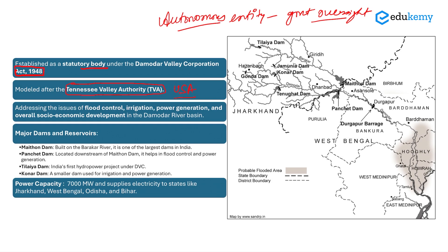The core objective in laying out this project was to address the issues of flood control, irrigation, power generation, and to ensure socio-economic development in the Damodar River Basin. Whenever we talk about the Damodar River Basin, it means the basin area which covers parts of Jharkhand and West Bengal.